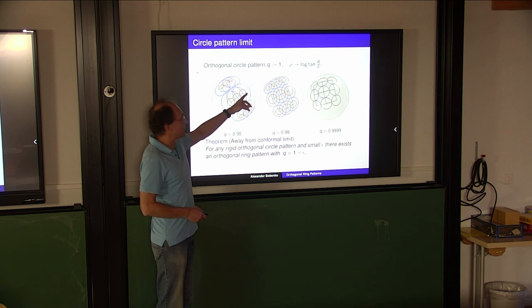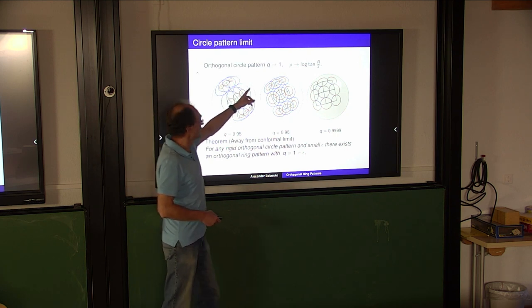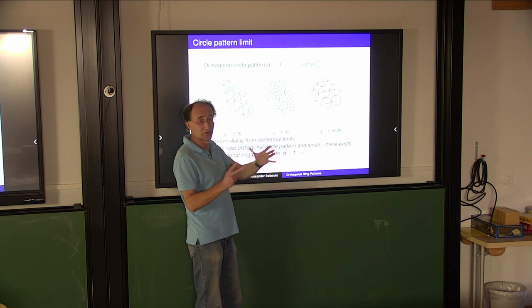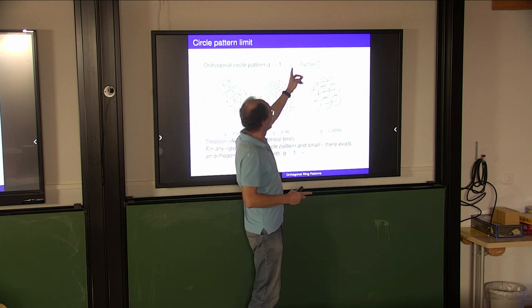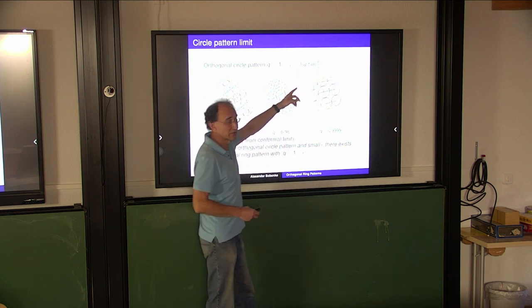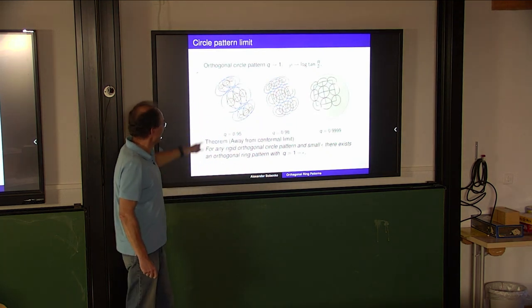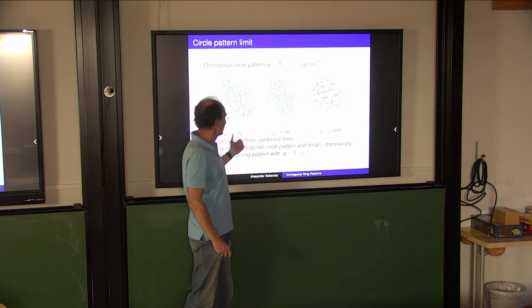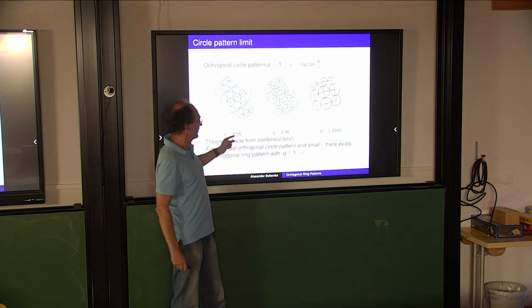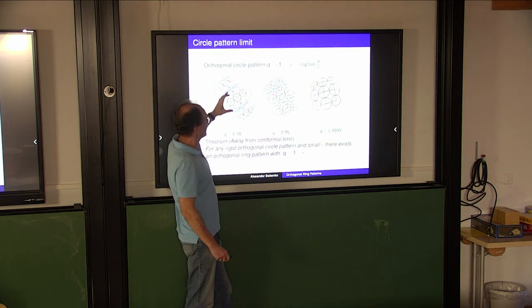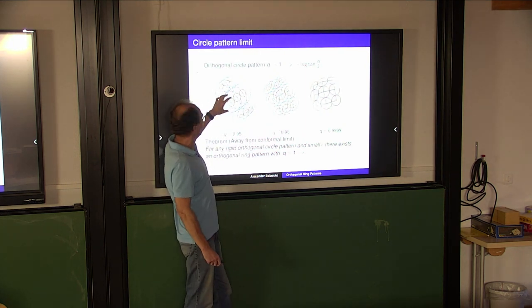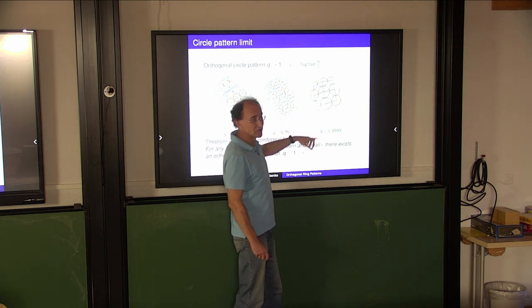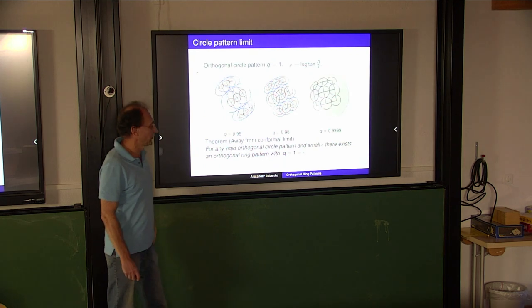In the circle pattern limit, q goes to 1 - that's the degeneration of the elliptic curve - and rho goes to log of tangent of half the radius. You can see numerically what happens if you increase q: in the limit as q goes to 0, the rings look fully developed; here they are a little bit thinner; and here they almost degenerate to circles.